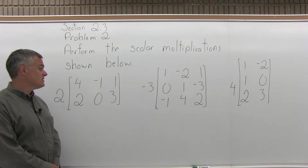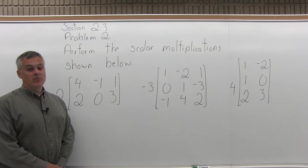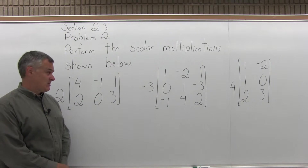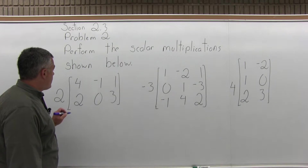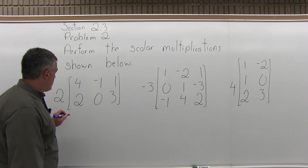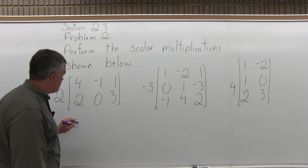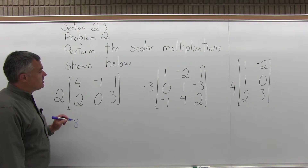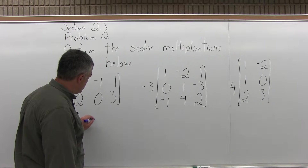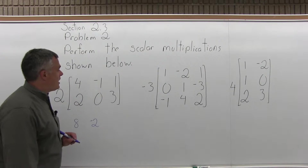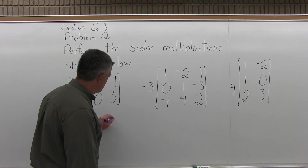What that means is multiply the 2 that's in front of the matrix times every number inside the matrix. So on the top row, that 4 in the upper left becomes 2 times 4, which is 8. The negative 1 in the middle of the top row becomes 2 times negative 1, so it becomes negative 2. And the 1 in the upper right position becomes 2 times 1, which is 2.